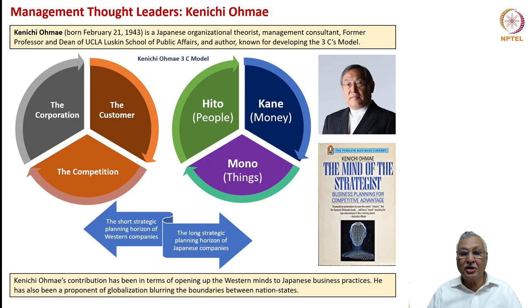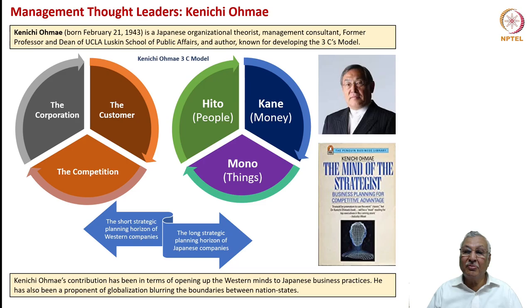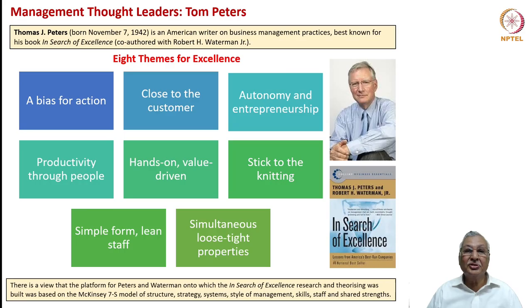Ohmae also advocated moving away from the short strategic planning horizon of Western companies — three to five years — to the long horizon of Japanese companies, which typically look at a 10- to 15-year planning horizon even in mature industries like automobiles. He was singularly successful in opening up Western minds to Japanese management philosophies and was also a great proponent of globalization and blurring of boundaries between nation states.